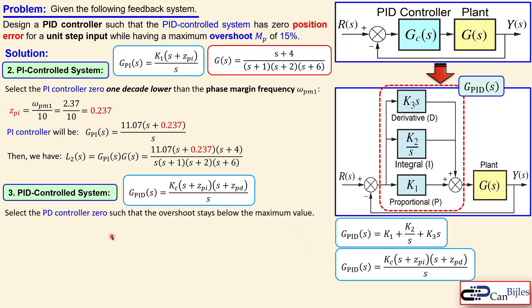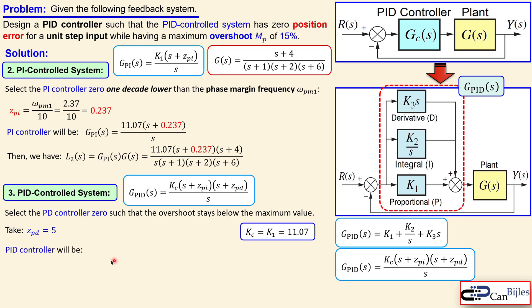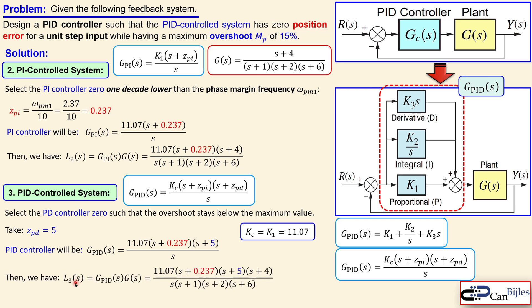The zero location ZPD can be chosen close to the imaginary axis or far away — it is an initial choice that you can iterate on by simulating the system. We have KC = 11.07, ZPI = 0.237, and a selected ZPD. The PID controller is then given by the expression with both ZPI and ZPD, and the design is completed. The full loop transfer function L3 is GPID times the plant.